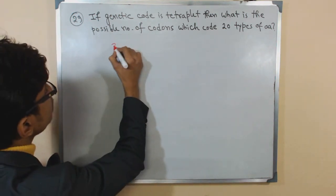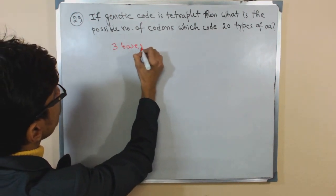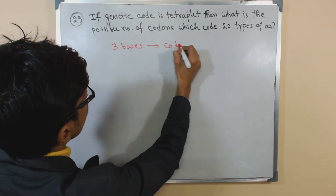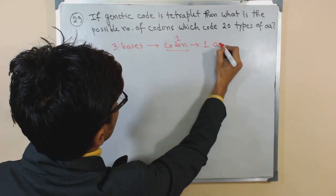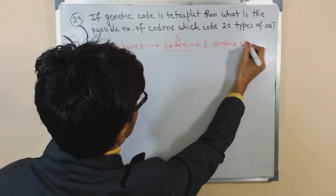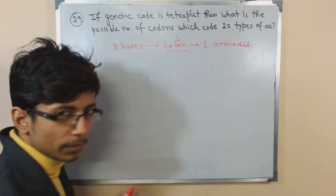So that is the normal rule: three bases are called a codon, and one codon produces one amino acid. That is the normal situation.